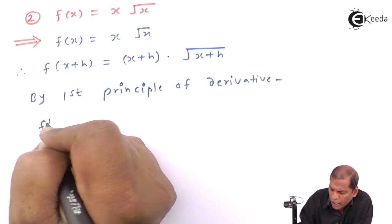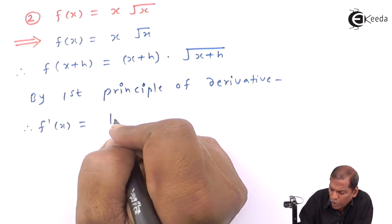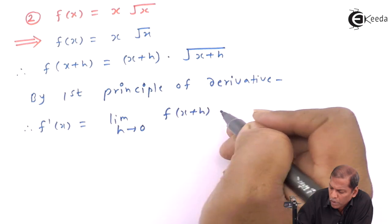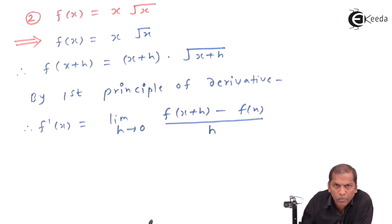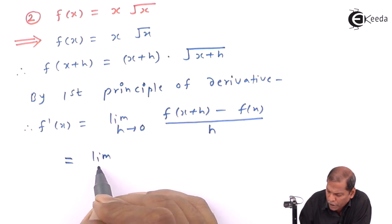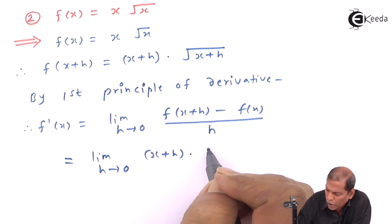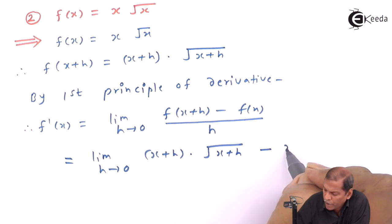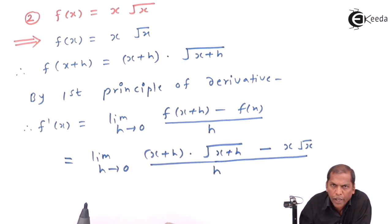By the first principle of derivative, we have the formula: f'(x) is equal to limit h tends to 0 of f(x+h) minus f(x), whole divided by h. Now substituting the values, we get limit h tends to 0 of (x+h) into square root of (x+h) minus x into root x, all divided by h.